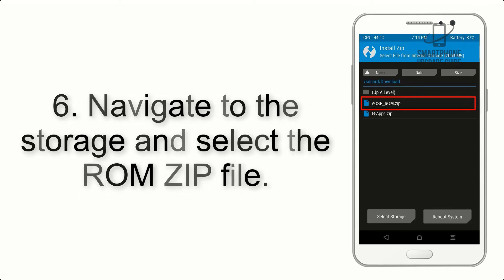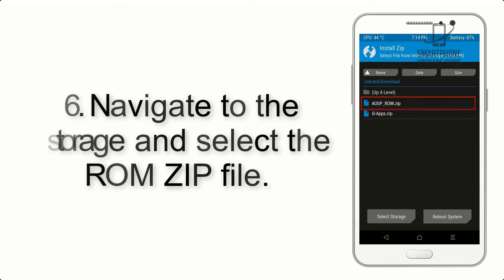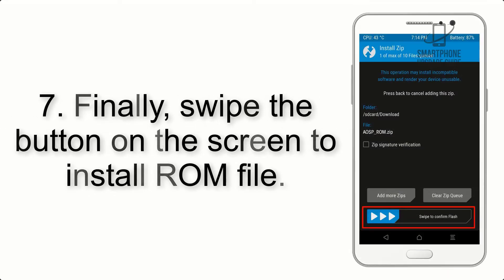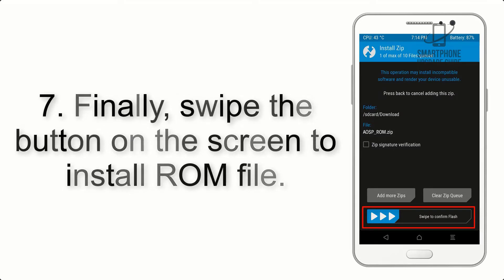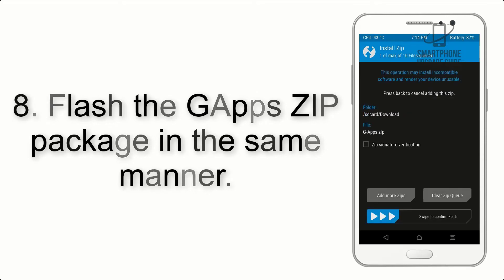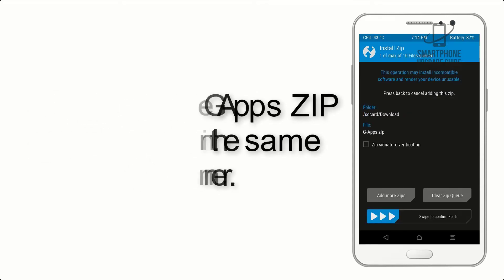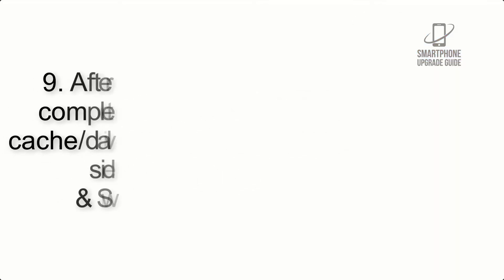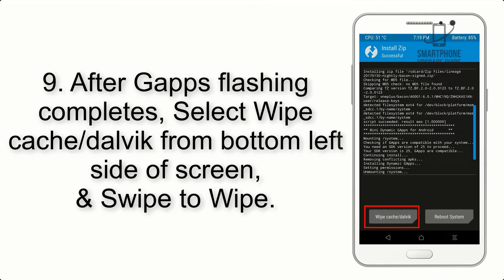Step 5: Go back to the recovery main screen and tap on the Install button. Step 6: Navigate to the storage and select the ROM zip file. Step 7: Finally, swipe the button on the screen to install the ROM file.